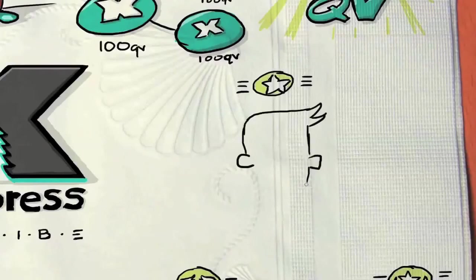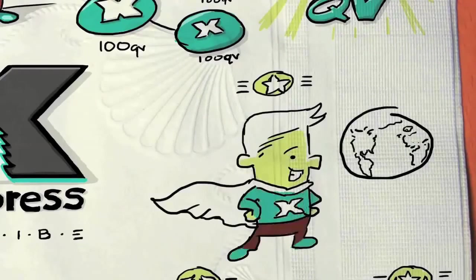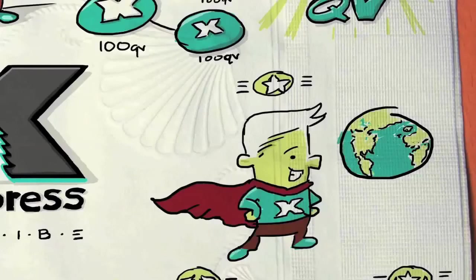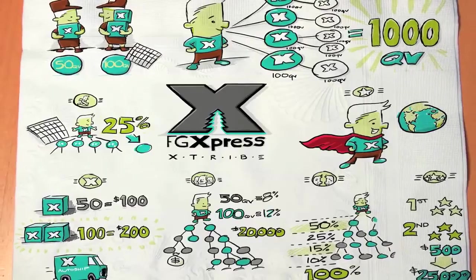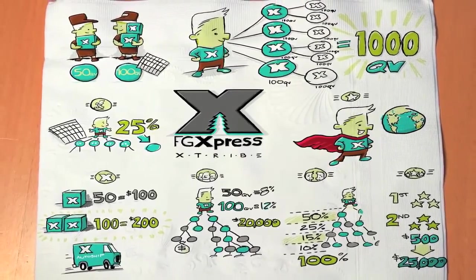When you hit the top rank of All-Star, you've truly mastered the world of international business. You've created a legacy with residual income. This compensation plan is so simple that it can be explained on a napkin. As you can see, the X-Tribe is the foundation of your business.